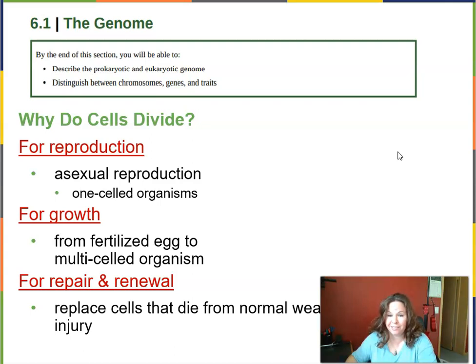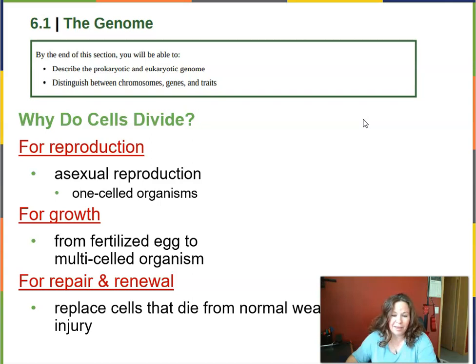Obviously, for reproduction — it's what your cells have been doing ever since the sperm fertilized the egg that made you. When cells make a copy of their DNA, which is called the genome, and then divide by mitosis, that's a form of asexual reproduction. One-celled creatures also do that — they make a copy of their genome, their complete set of DNA, and divide in two. In single-celled organisms, it's mostly called binary fission.